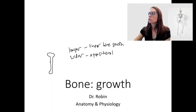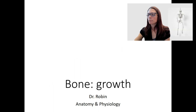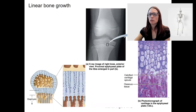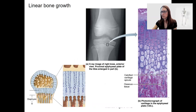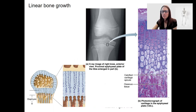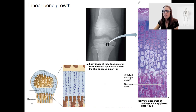So first, linear bone growth. This process is very similar to what occurs in endochondral ossification. We're forming bone tissue because the bone has to grow longer. One main difference is linear bone growth only occurs at the epiphyseal plates.